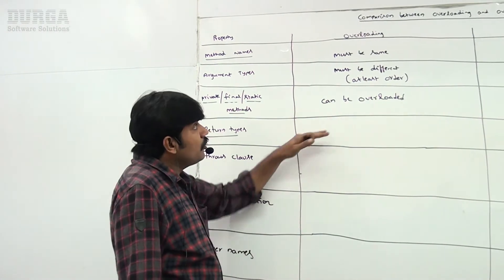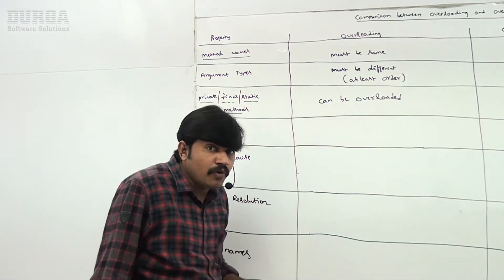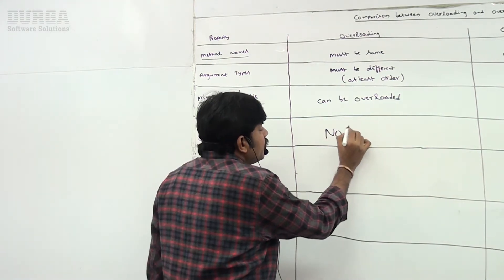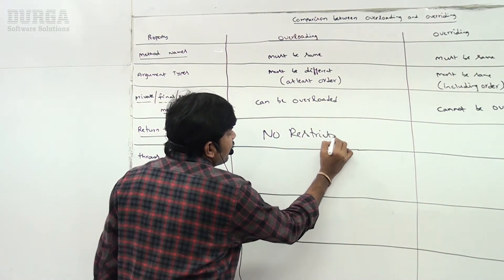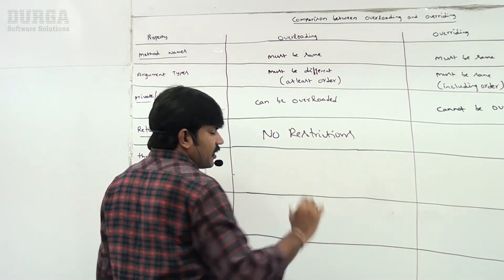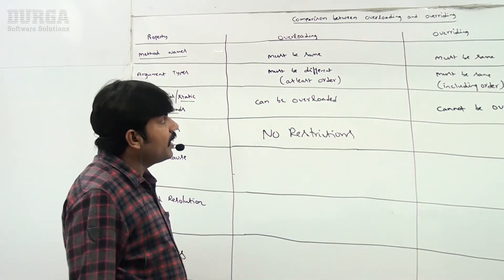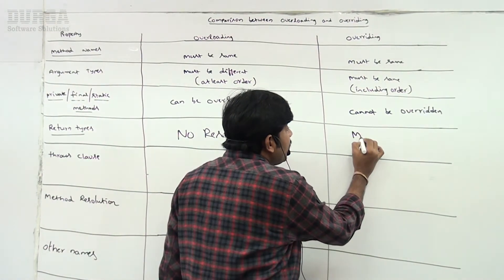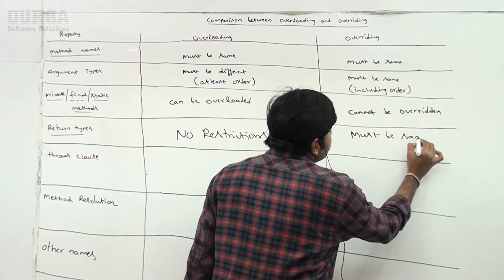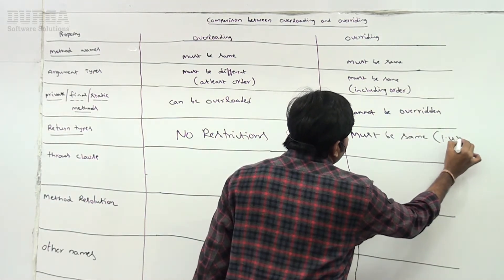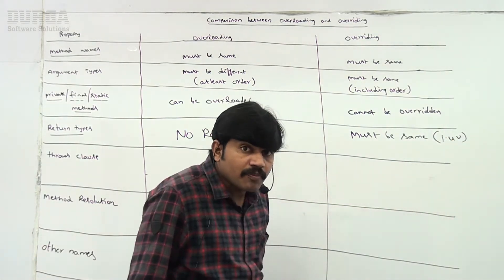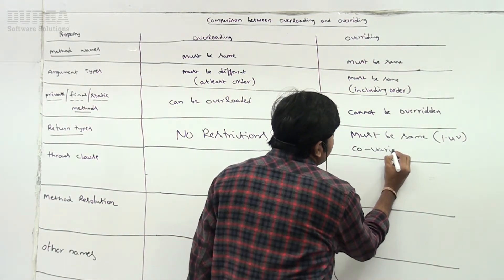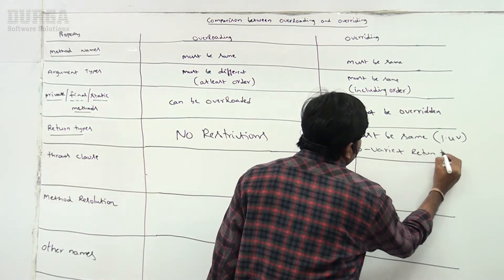Regarding return types — in overloading, there are no restrictions. You can have the same or different return types, no problem at all. But in overriding, return types must be same until Java 1.4. From Java 1.5 onwards, covariant return types are also allowed.